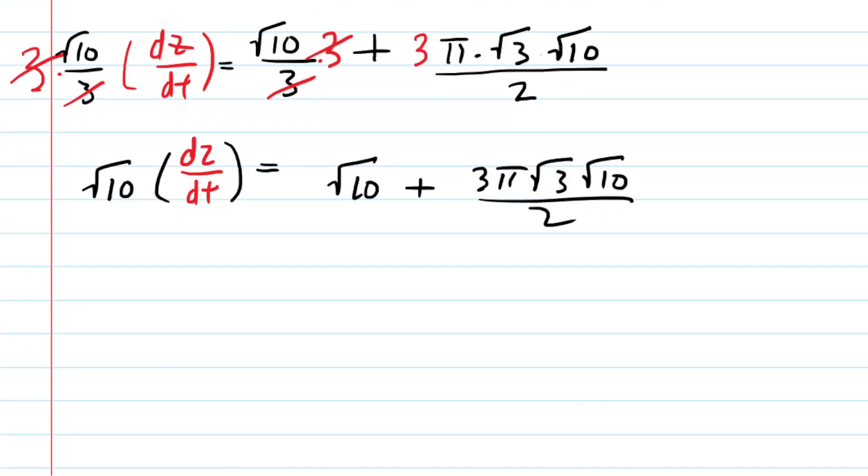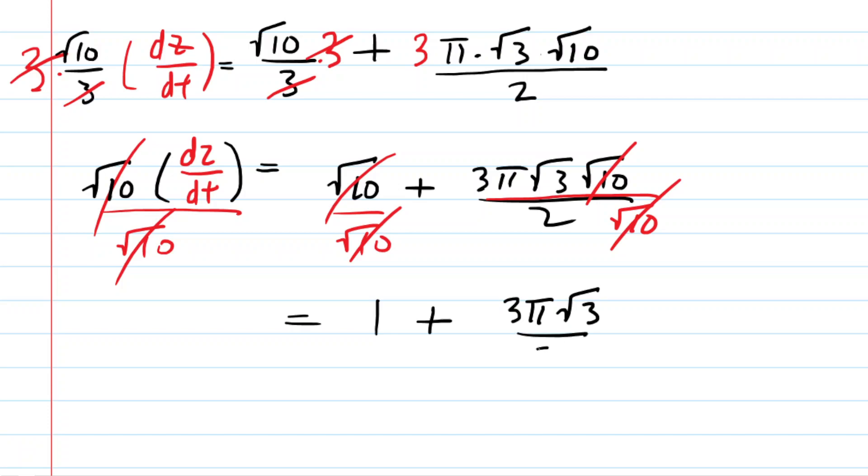One more step here. We could just divide every term by √10. And this is going to be neat, particularly with regard to the last term. We divide that by √10, and those √10s would cancel. So with those, these cancel and become a 1. So it looks like the right side, which is our answer, is going to be 1 plus, and then we have 3π√3 over 2. That's a little hideous. And then this is dz/dt.